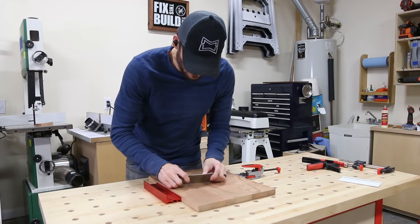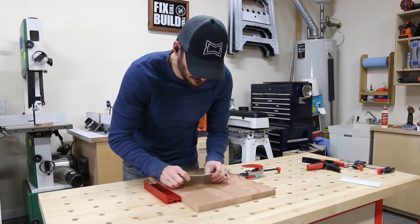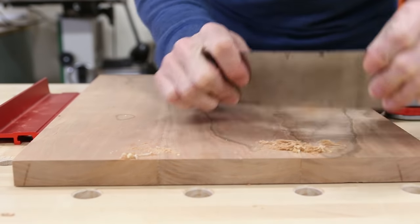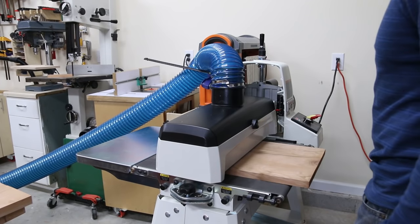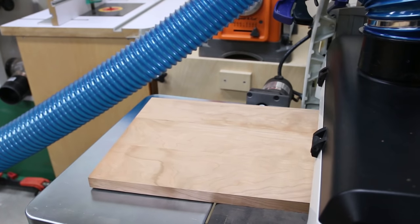By this time the tops were good and dry so I went ahead and took them out of the clamps. I cleaned up the glue squeeze out and smoothed the seams with my card scraper. You can see these tops are pretty figured so I put them through the drum sander instead of my planer to avoid any tear out that might happen.